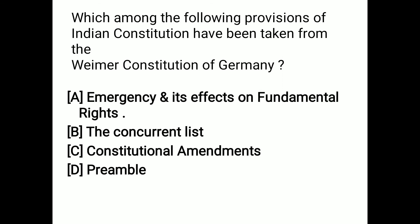The next question: which among the following provisions of the Indian constitution have been taken from the Weimar constitution of Germany? Options are emergency and its effects on fundamental rights, concurrent list, constitutional amendment, or preamble. We take emergency and its effects on fundamental rights from the Weimar constitution of Germany. That is the correct answer.